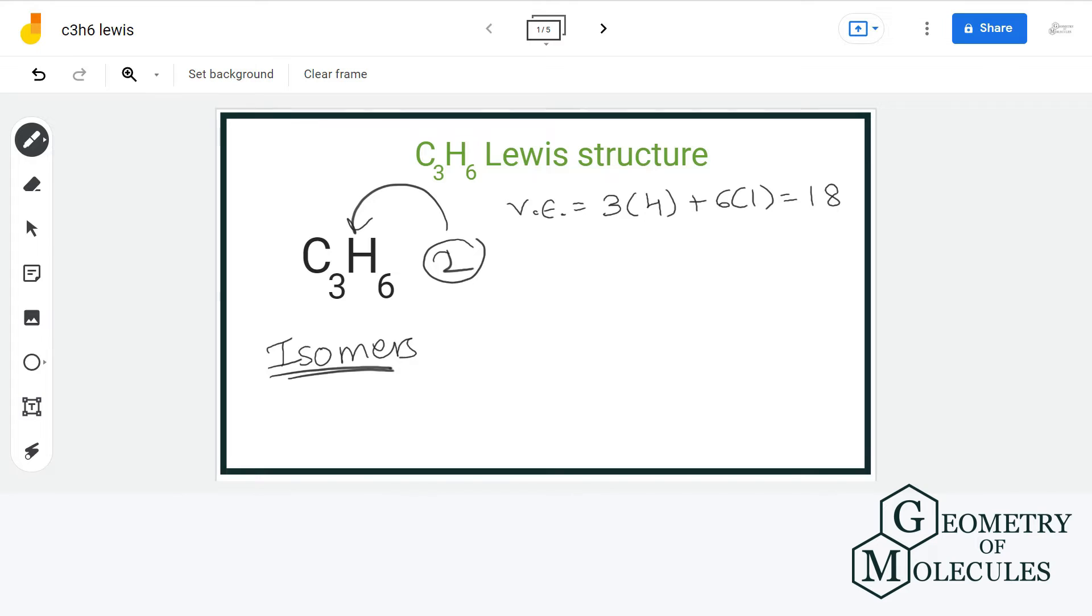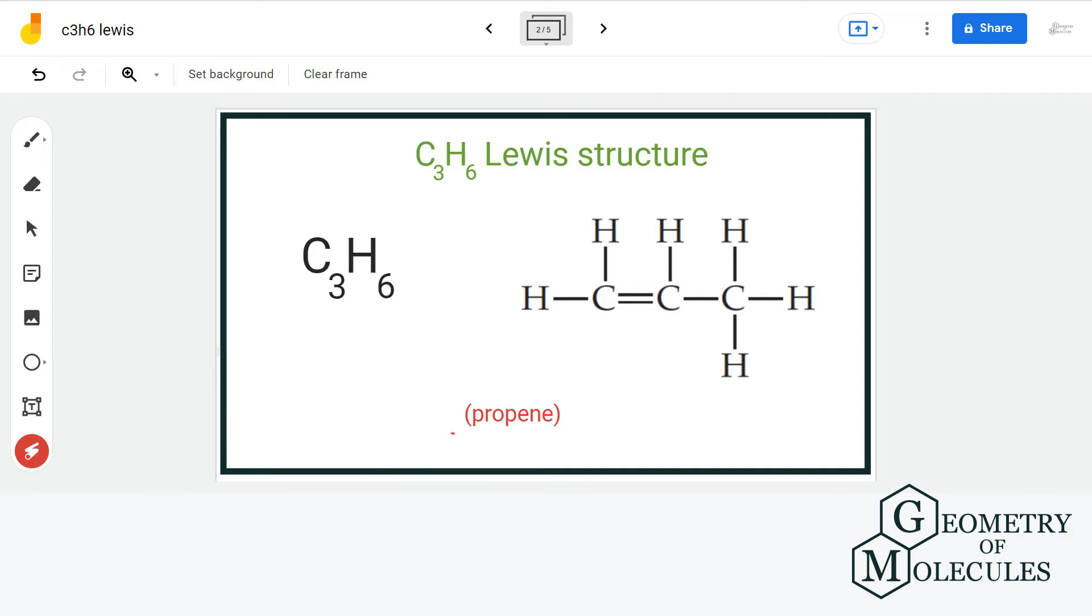For the first structure, we will arrange 3 carbon atoms in series and attach hydrogen atoms like this. Then we will put electron pair in between each atom for bond formation. Now these 2 carbon atoms here need 2 more electrons for completion of octet and we only have 2, so we will put 2 electrons in between these 2 carbons and that will result in the formation of double bond. This is the final Lewis structure of propene.